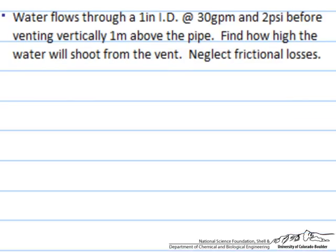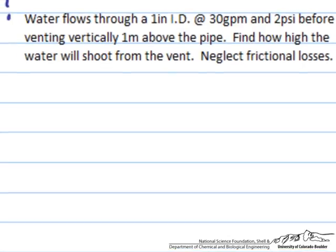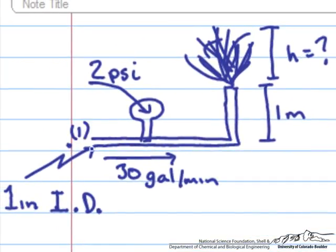We should apply Bernoulli's equation that says that the mechanical energy of a piece of fluid must be conserved. A piece of fluid in the pipe here, we'll call this point one, travels through the pipe up one meter and then out the vent to the top and we'll call this point two. We know the mechanical energy must be the same at point one that it is at point two.